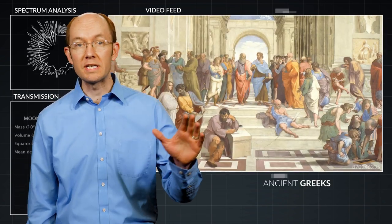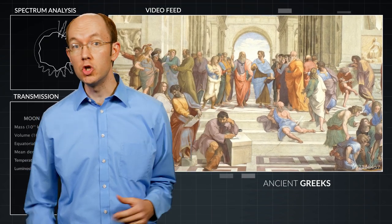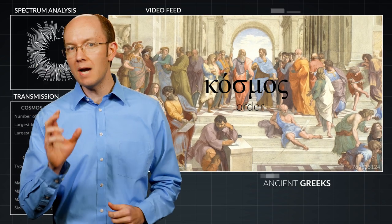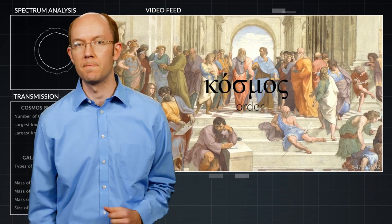The ancient Greeks, as far back as the 6th century BC, used their word for order, cosmos, to describe what they observed in the world around them.